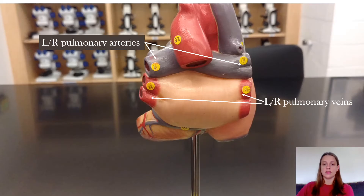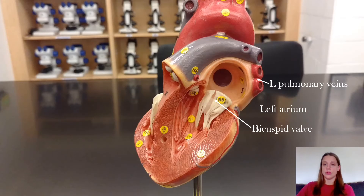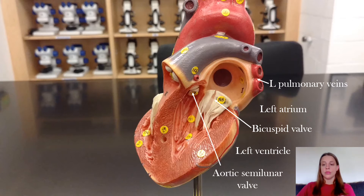Once the blood returns to the heart through the left and right pulmonary veins, it enters into the left atrium, then passes down through the bicuspid valve into the left ventricle, which then pumps the blood out through the aortic semilunar valve where it enters the aorta.